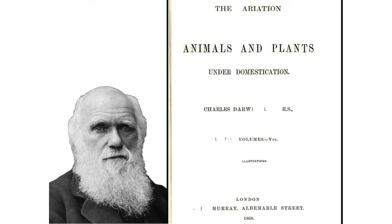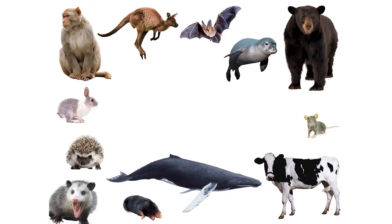Darwin was very interested in variation. Beyond his book on natural selection, he wrote about the variation in animals and plants under domestication. He was focused on natural variation and also domestic variation, like the pigeons. We see this variation across species — these are all mammals, furry things that produce milk for their offspring, and they all look very different. They've all occupied different ecological niches, whether in the water, on land, in the air, or underground.